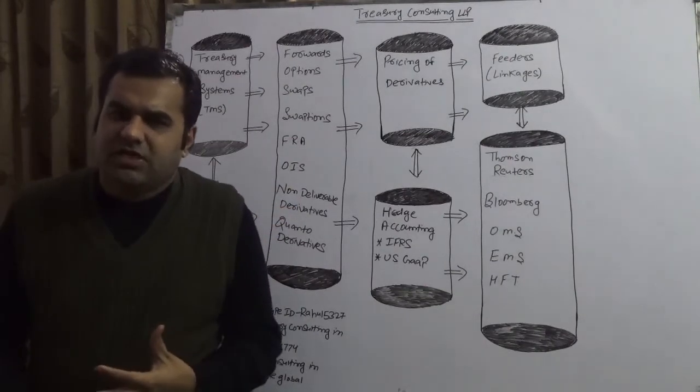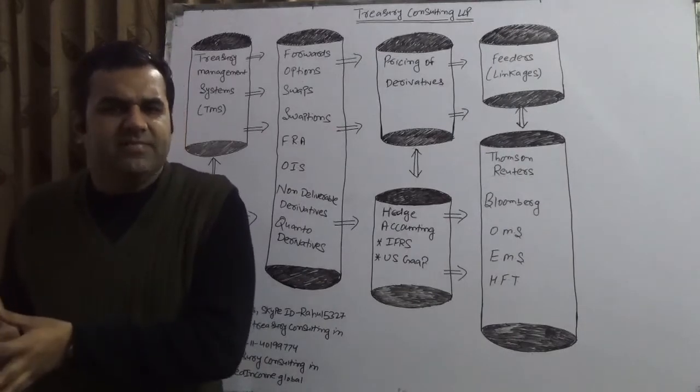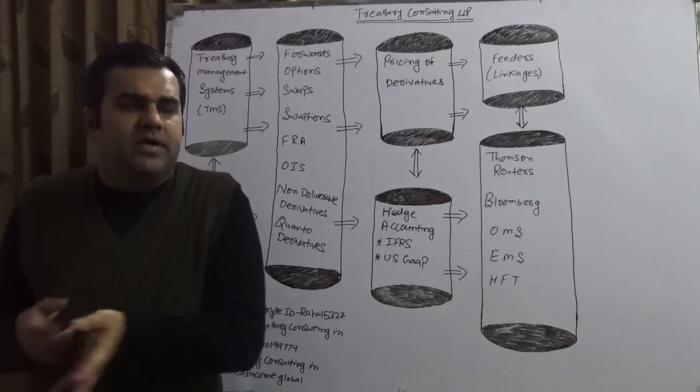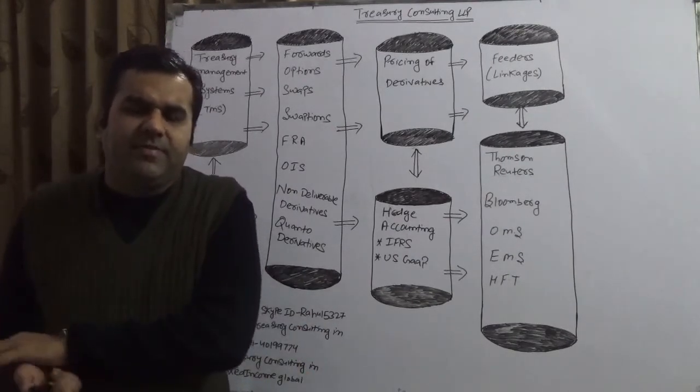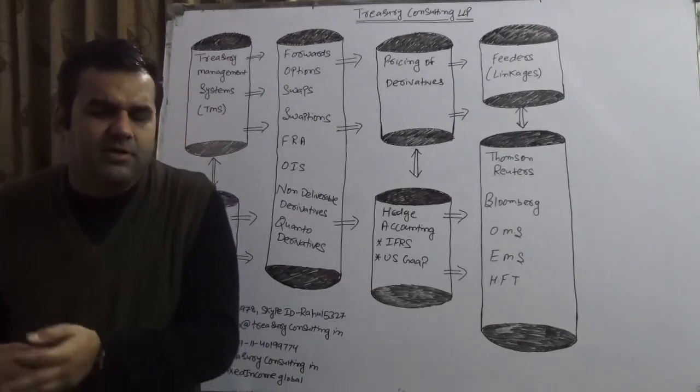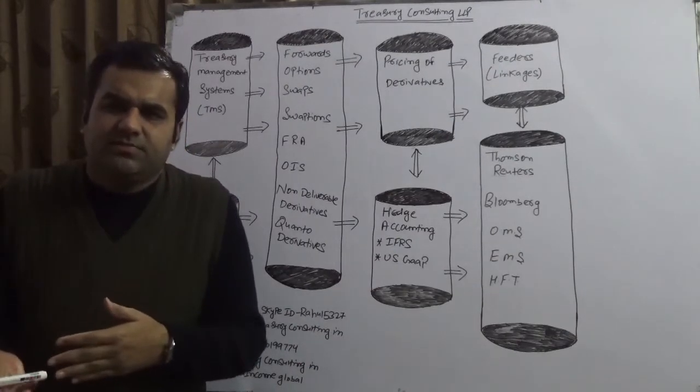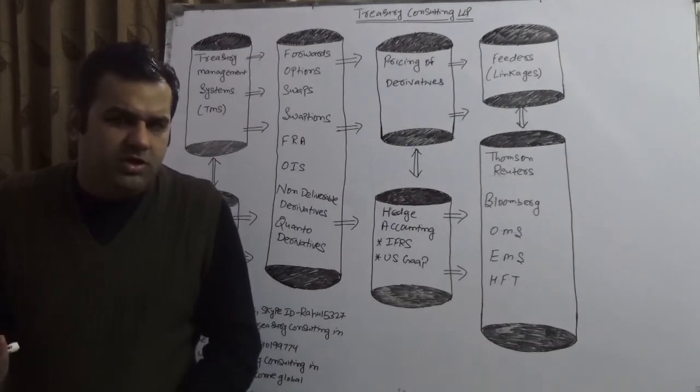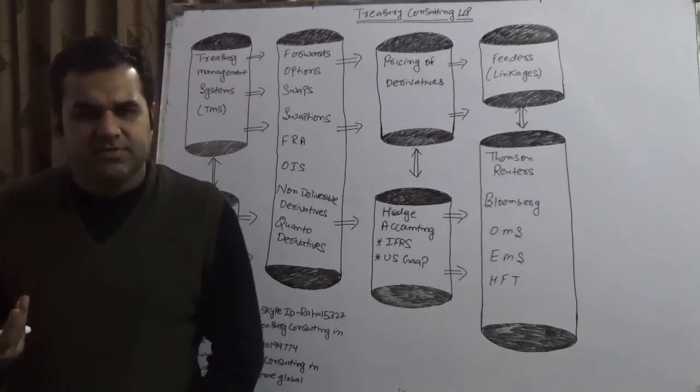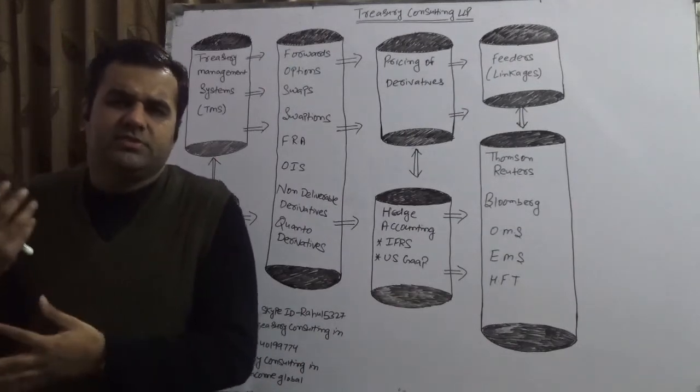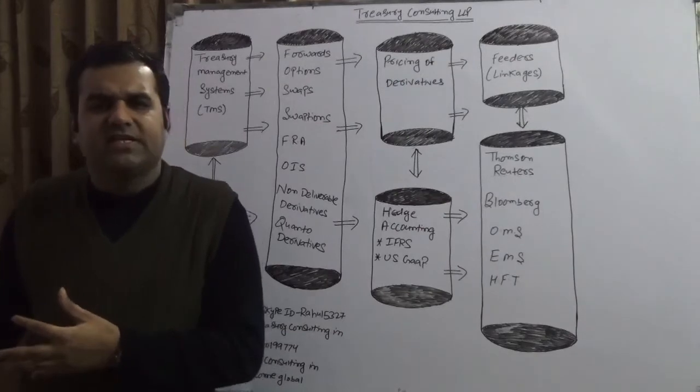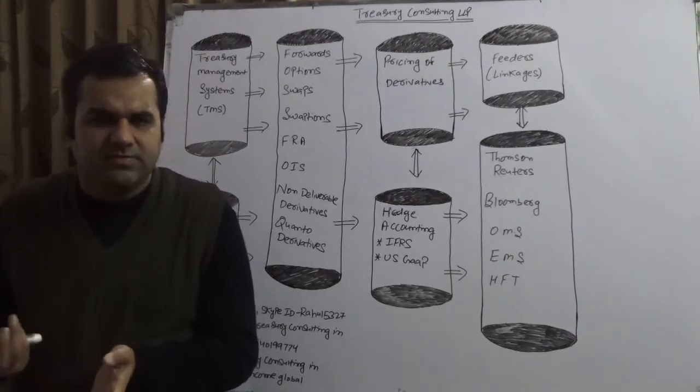Quanto derivatives are those derivatives when the currency being traded is dollars but the delivery would be happening in GBP. I'm just giving you an example. So you traded in dollars, the notional principal is in dollars but the settlement would happen in GBP or alternatively the notional principal is in euro and settlement would happen in Japanese yen.